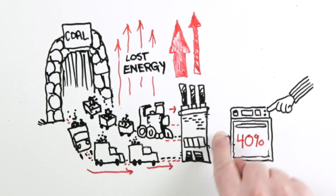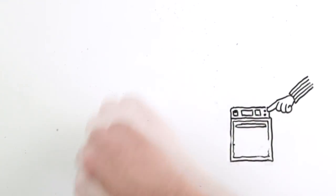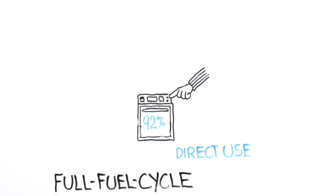how can natural gas be utilized to be approximately 92% efficient? Simple. Reduce the number of energy wasting steps in the cycle. This is called direct use. Here's how it works.